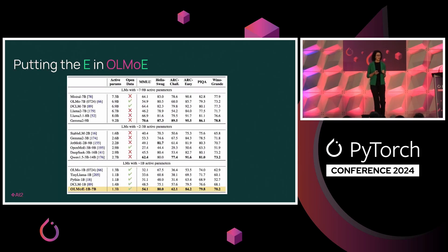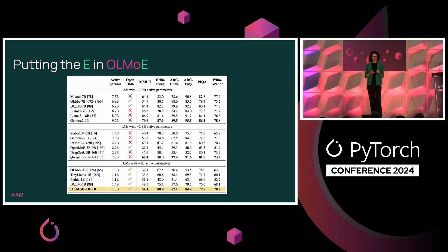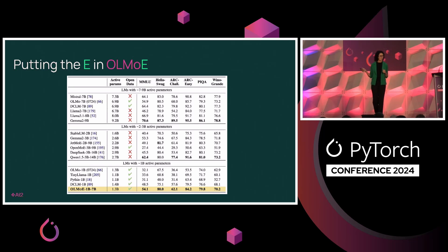Here are our results for the latest MoE model. I'm categorizing results in three buckets: models at 7B to 9B sizes like LLaMA 8B, Mistral 7B, or Gemma 9B; models with active parameters between 2 to 3 billion like Qwen 3B with 14B total parameters; and models with 1 billion active parameters. Our OLMo-E with 1 billion active parameters achieves 54 MMLU accuracy, which is really high for its class.